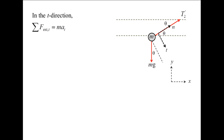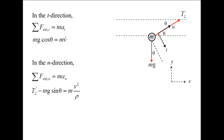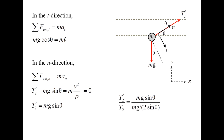In the t-direction, the weight has a component that points in the positive direction with a magnitude mg times cosine theta. The acceleration in the t-direction is equal to the time rate of change of the sphere's speed, v-dot. It turns out that this equation is not useful in solving this problem. In the n-direction, the sum of the forces is T2 prime minus the n-component of the weight, which is mg times sine theta. The normal acceleration is the velocity of the sphere squared divided by the radius of curvature rho. Since v is zero because the sphere starts from rest, we now have an expression for T2 prime in terms of mg and theta, and can find the ratio of the tension in wire 2 immediately after wire 1 is cut to the initial tension in wire 2.